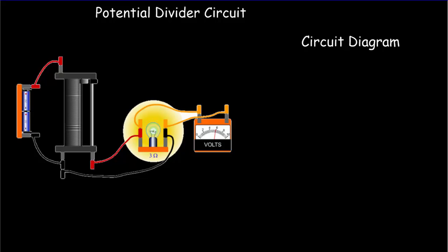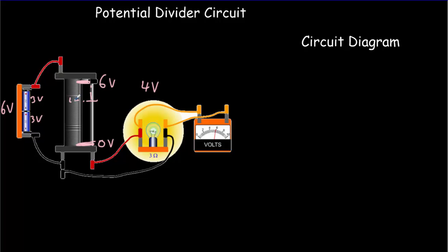Let's see how we'd typically put a potentiometer into a circuit — we'd call this a potential divider circuit. The reason we'd want one is maybe we'd like to dim a light bulb, moving the slider so the light gets brighter or dimmer. Or perhaps our light bulb is supposed to run at 4 volts, but all we've got is two 3-volt batteries in series giving 6 volts. By positioning the slider, we can get 0 volts at the bottom, the full 6 volts at the top, and somewhere in between we'd get 4 volts — where our light bulb functions correctly.